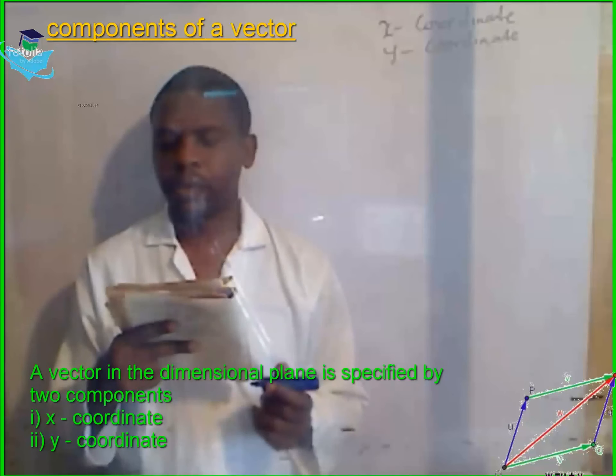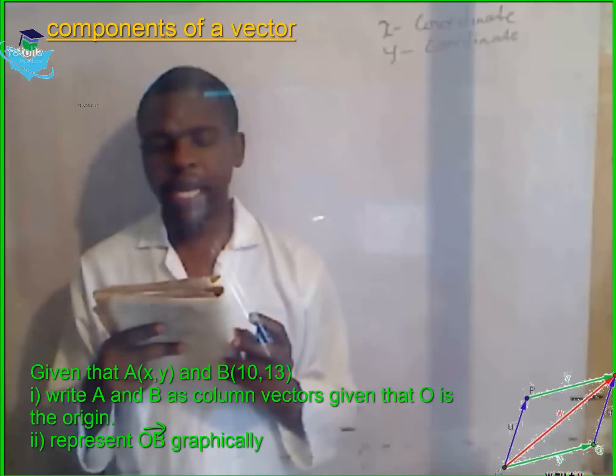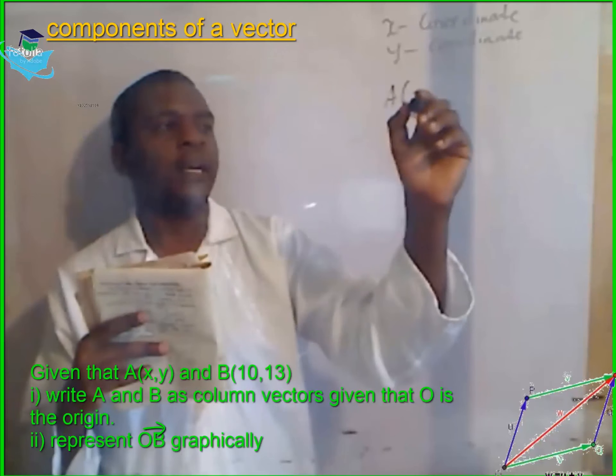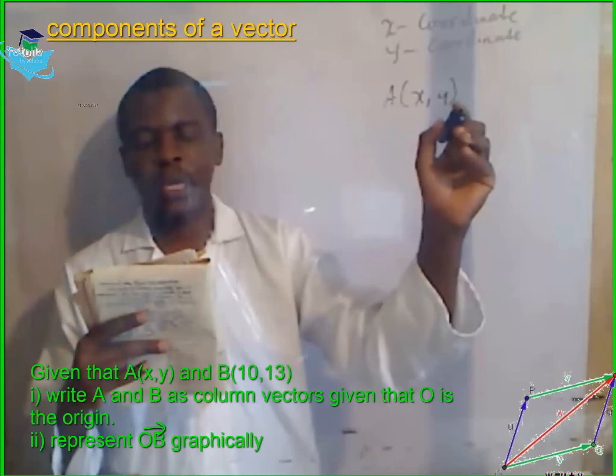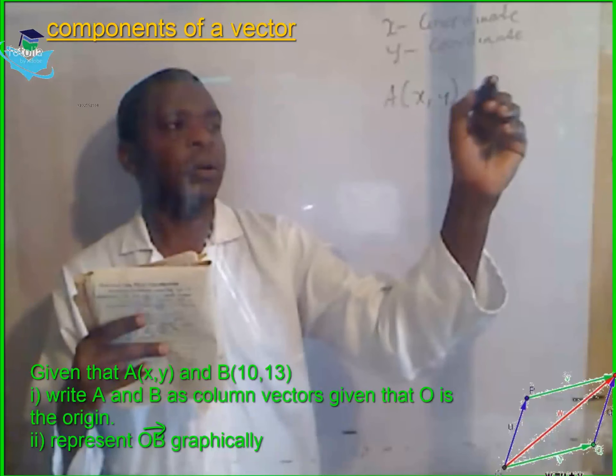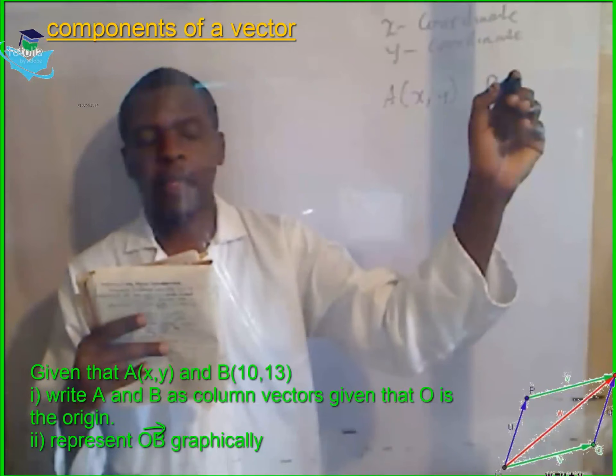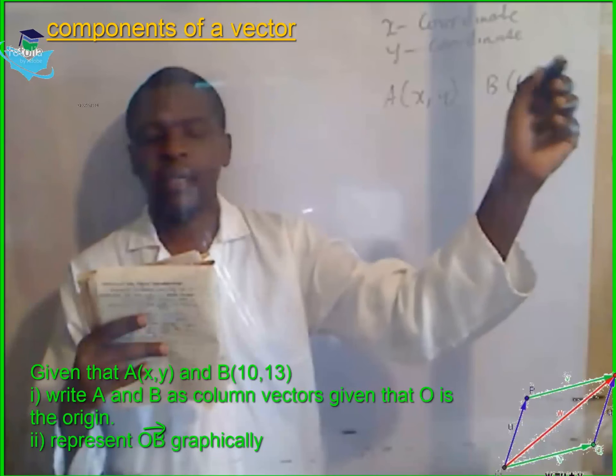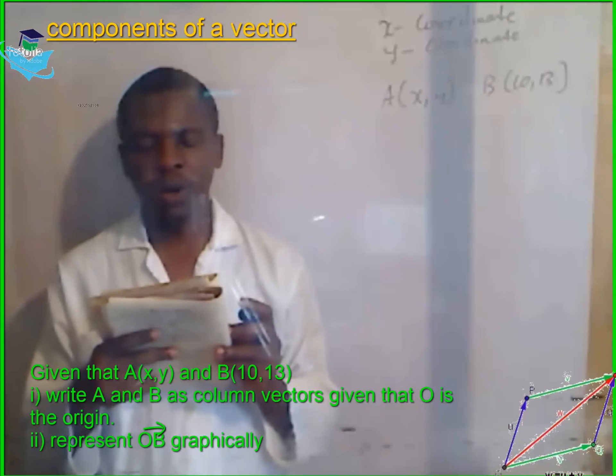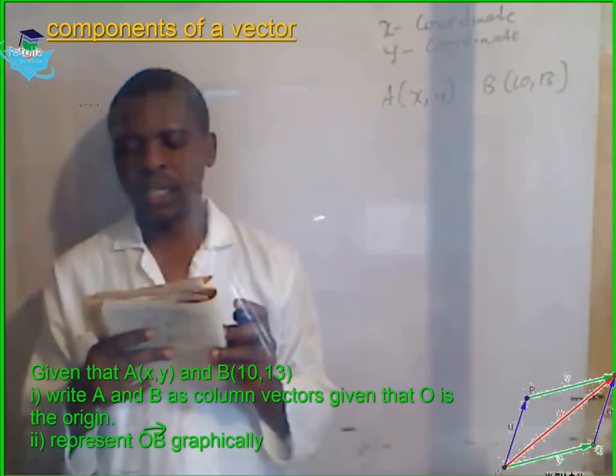Example: given that the point A has coordinates x, y, and the point B has coordinates 10, 13, write A and B as column vectors, given that O is the origin.